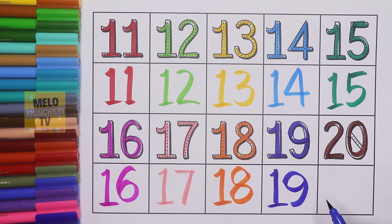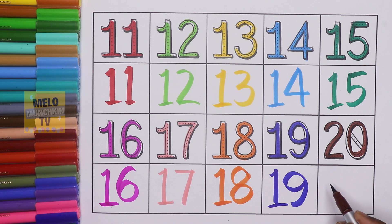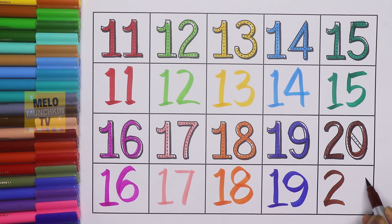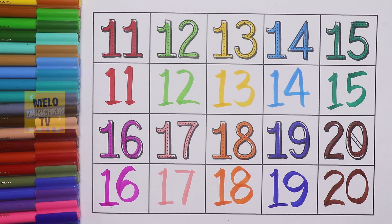Lastly, 20, 2 and 0, 20, and the spelling is T-W-E-N-T-Y, 20. So hence we have completed our numbers and number spellings.